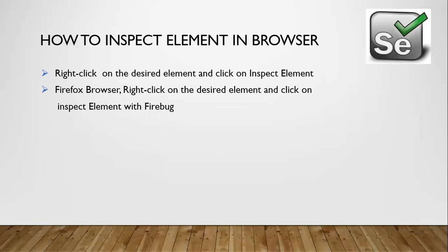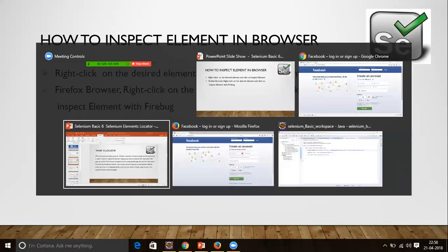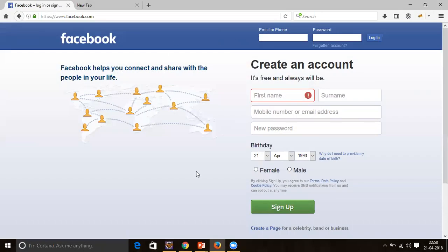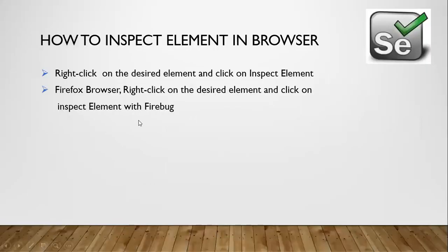Now let's see how to inspect elements and recognize them in a browser. If we talk about the Firefox browser, let's move to Firefox. If you want to recognize an element or write the locators of any element in Firefox, you need to inspect inside the HTML DOM of that element.